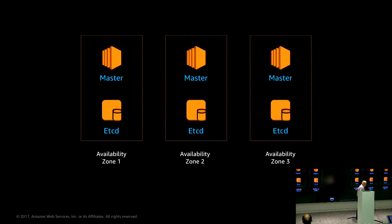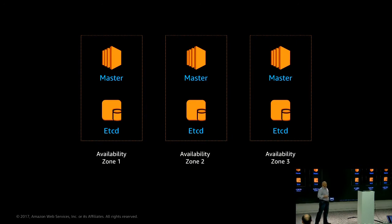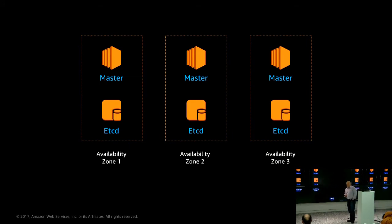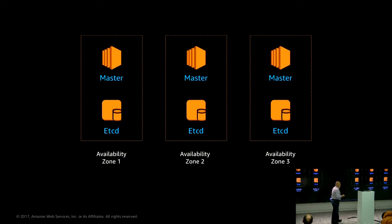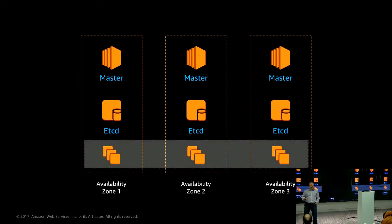Besides running a master in separate availability zones, you have to run etcd. etcd is a key-value store that is part of Kubernetes where the master stores its state. If your etcd goes down, you will have a pretty bad night — I will guarantee you that. That's the reason you need it in a high-availability deployment. You also need to decide whether etcd will run on separate servers or on the same server as the master, especially considering what happens during a Kubernetes upgrade. At the end, you have the actual worker nodes where you run your containers.